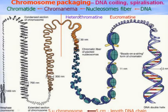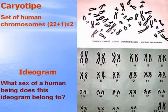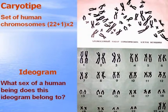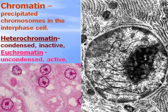Chromatin precipitated as chromosomes in interphase nuclei provides small granules. Heterochromatin forms large granules. The karyotype of human chromosomes consists of 22 pairs of somatic and one pair of sex chromosomes. What sex does this diagram belong to? Certainly to a woman, because here you see two X chromosomes.